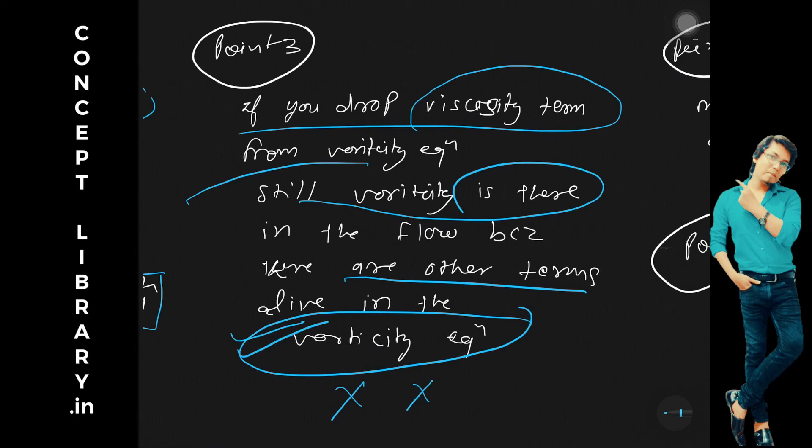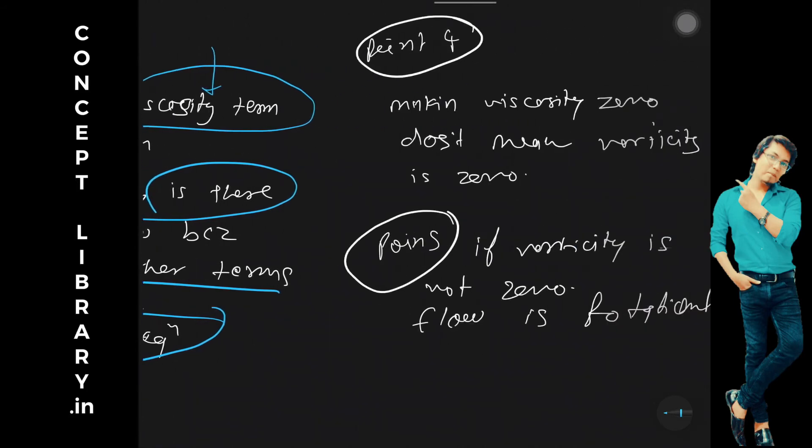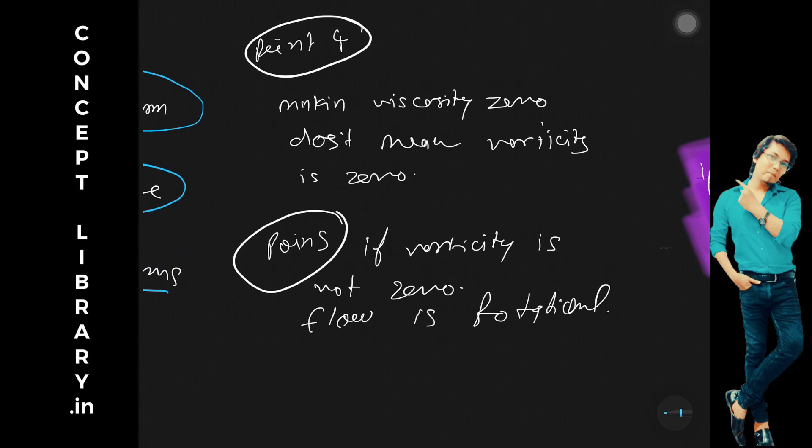So situation is somewhat clear now. Making viscosity zero does not mean vorticity zero, correct.